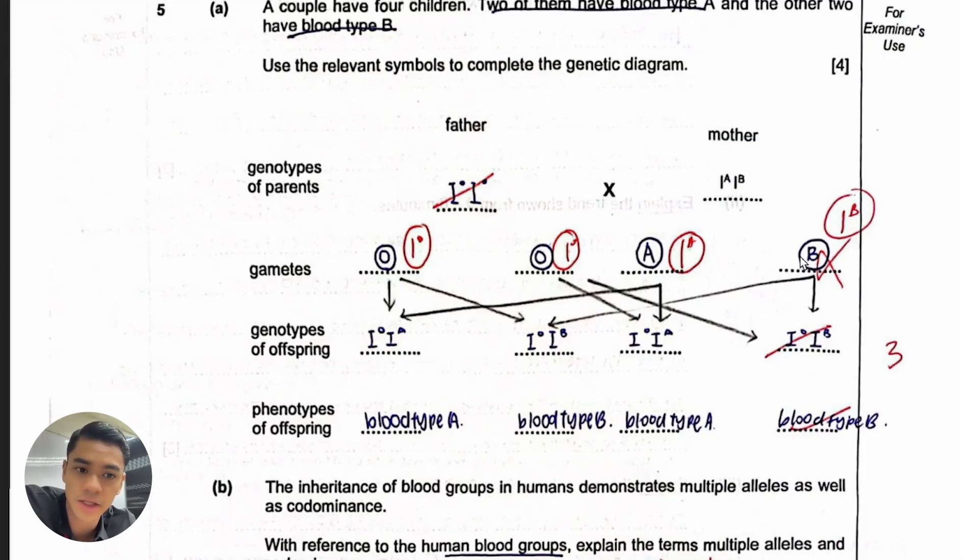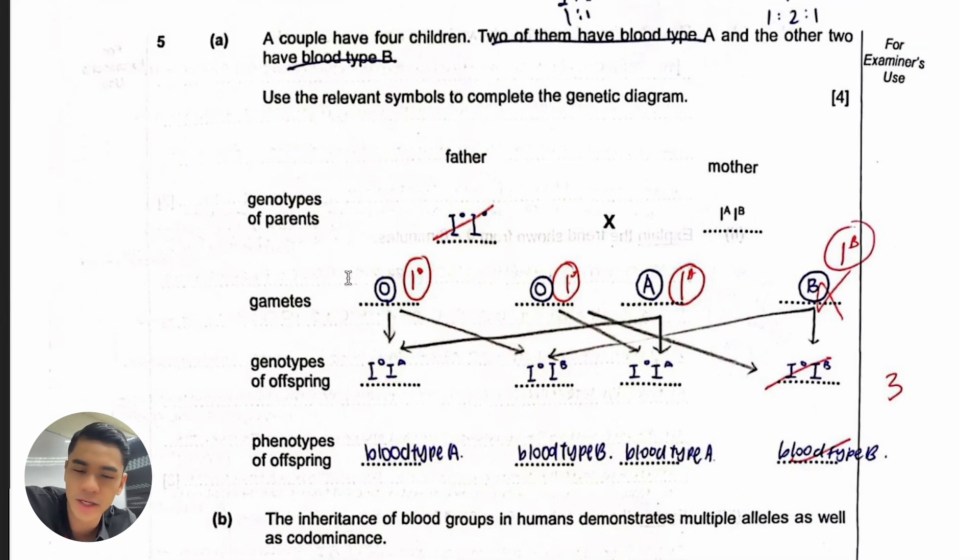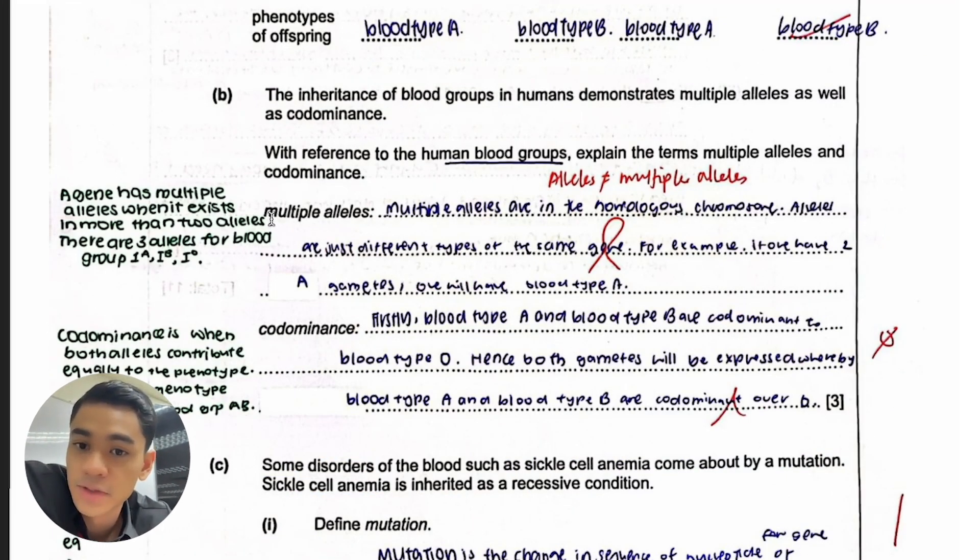The problem here is that O, A, and B are the phenotypes. In the gametes you need to draw the allele, so the genotypes are basically the two alleles and then gamete is just one allele each. This O, A, O, A, B is phenotypes which we should be writing at the bottom only. This is also not answering the question because they're asking what does this mean, what is the phenomena of multiple alleles and show how it's exemplified in the blood groups.